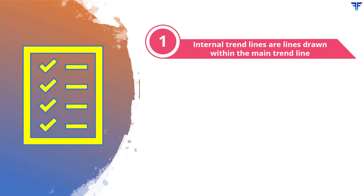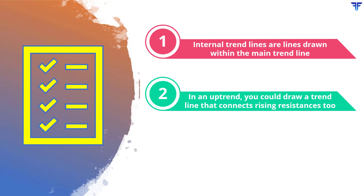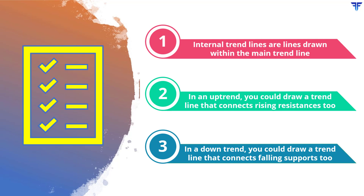Before concluding, let us briefly summarize our learnings. Internal trendlines are trendlines drawn within the main trendline to account for an acceleration in trend post the construction of the main trendline. Depending on how much the price move has accelerated, you may need to draw one or more internal trendlines. You can think of an internal trendline as a secondary trendline and the main trendline as the primary trendline. An uptrend line need not just connect rising supports but could also be drawn connecting rising resistances. Similarly, a downtrend line need not just connect falling resistances but could also be drawn connecting falling supports.